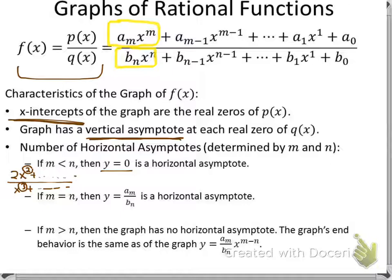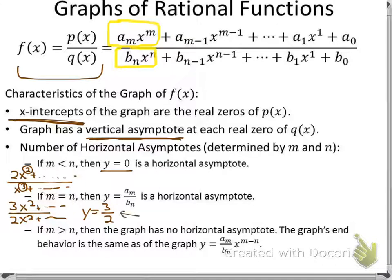If m equals n — for example, x squared over x squared plus more terms — we look at the lead terms only. Our asymptote is going to be the ratio of the leading coefficients. So if the leading coefficients are 3 and 2, the horizontal asymptote is y equals 3 over 2. The equal degrees tell us there is a horizontal asymptote, and the coefficients tell us where it is.